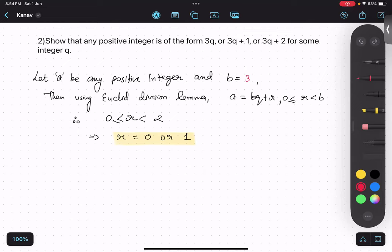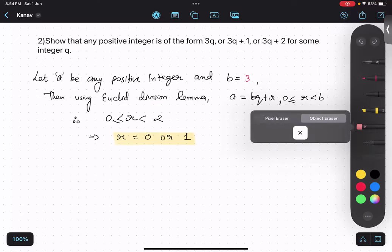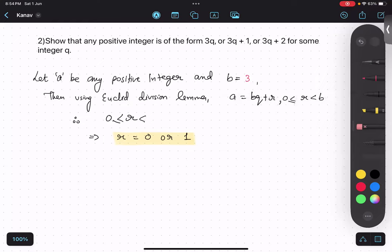So, I will take case 3. Then using Euclid division lemma, as we used earlier, r value would be what? What will be the r value? 0, 1 and 2. So, there will be 3 cases.